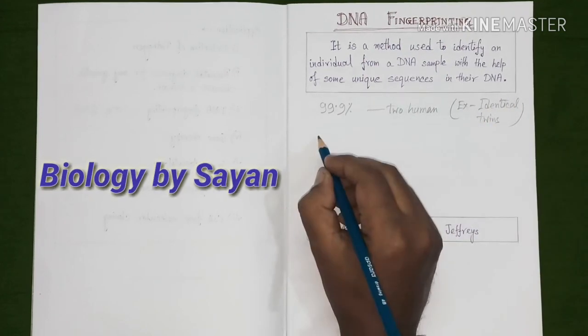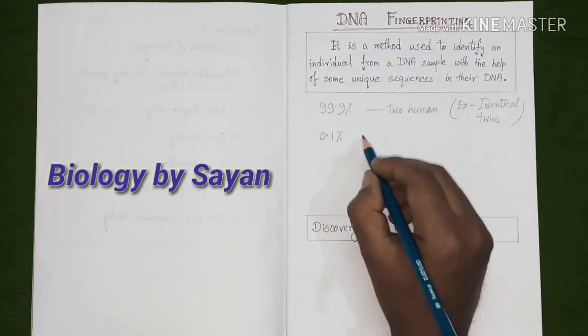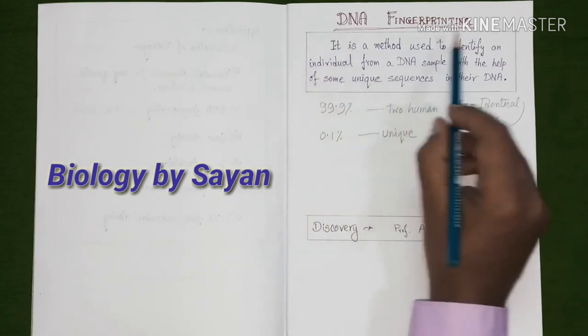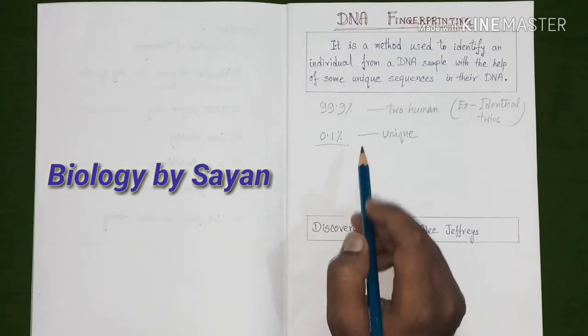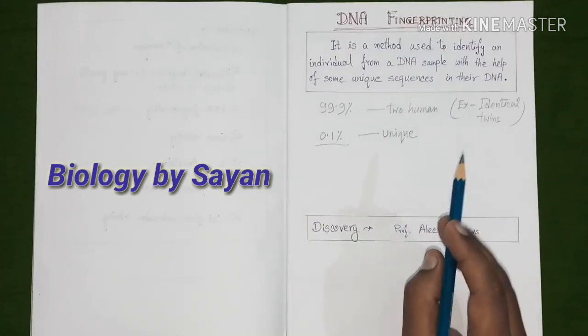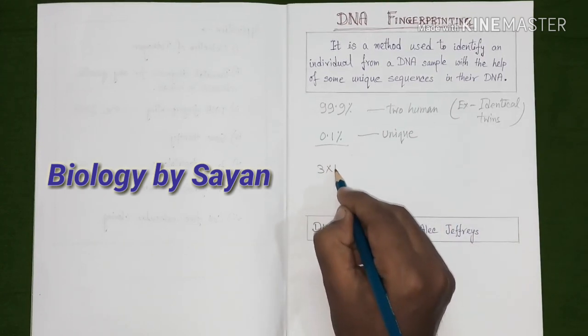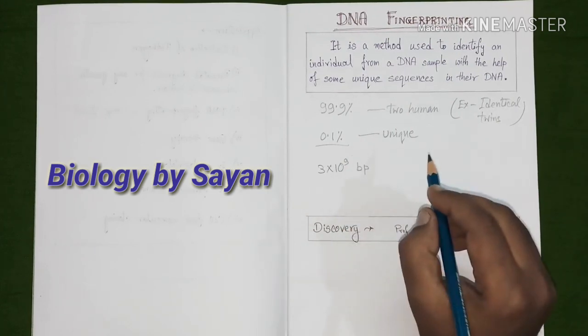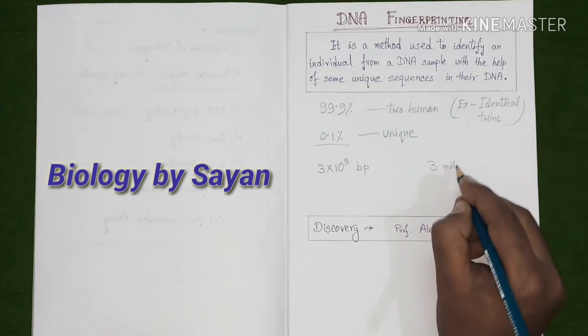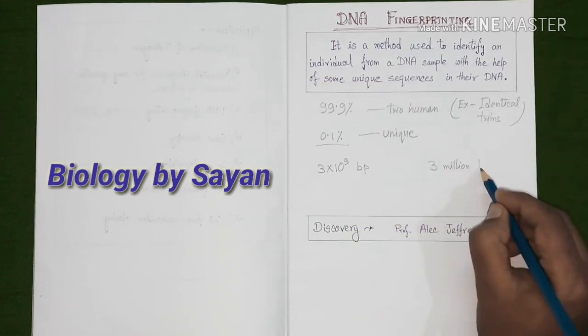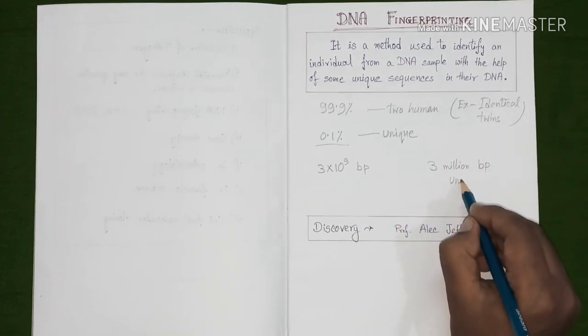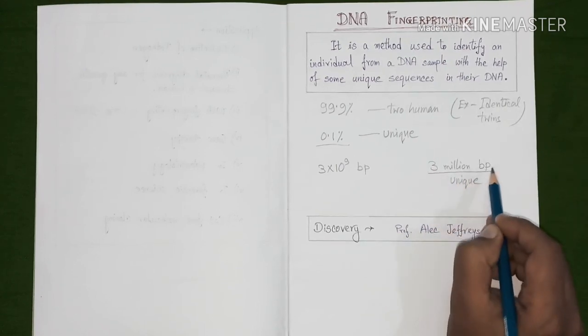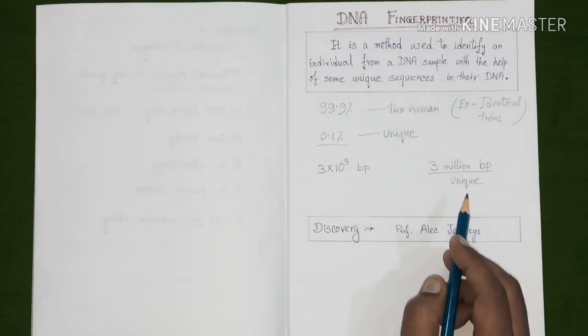It is that 0.1% of DNA that makes us unique. And for DNA fingerprinting, this 0.1% of DNA is very important. Among the entire 3 into 10 to the power 9 base pairs, only 3 million base pairs are unique in any individual. And we have to work with this 3 million base pairs for the purpose of DNA fingerprinting.